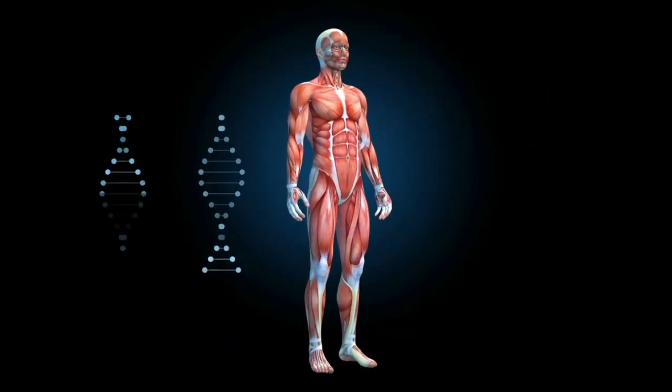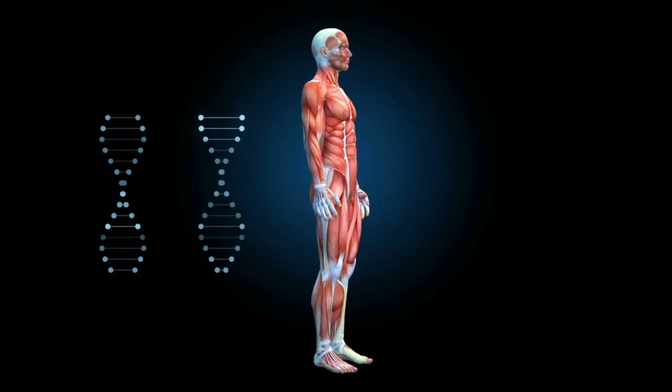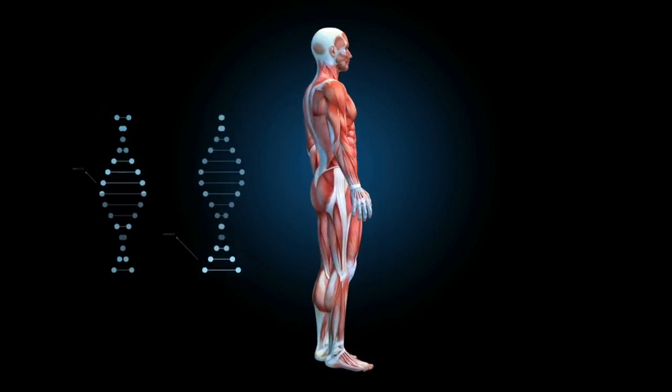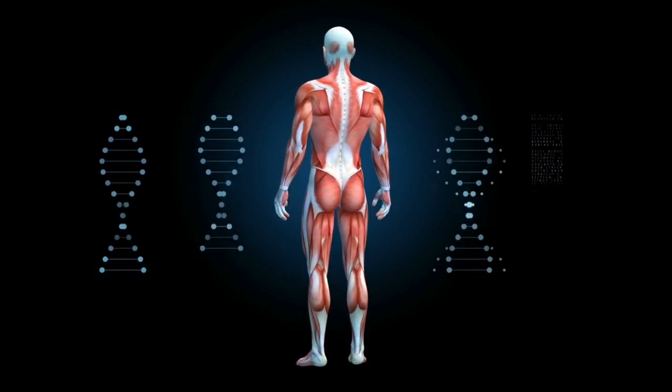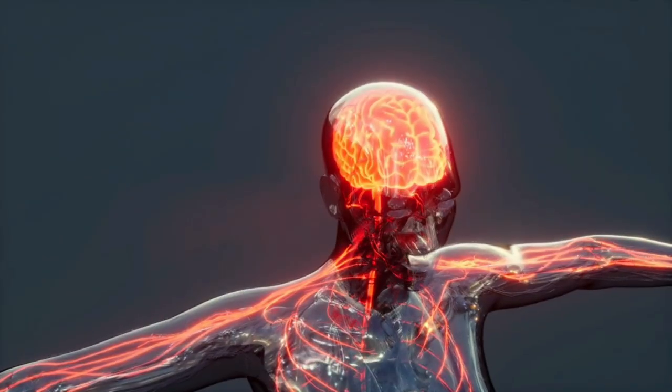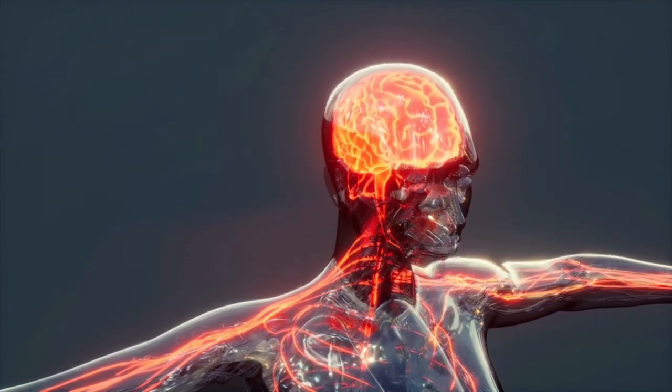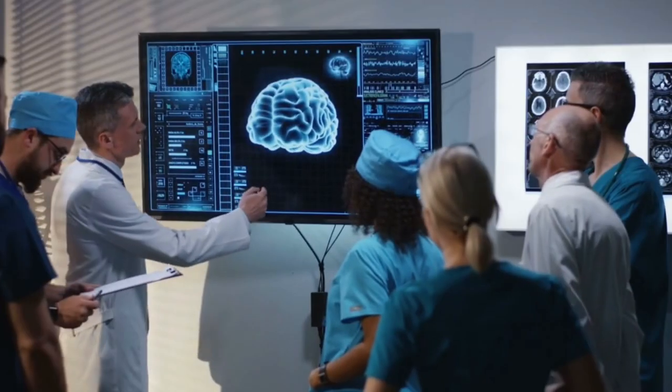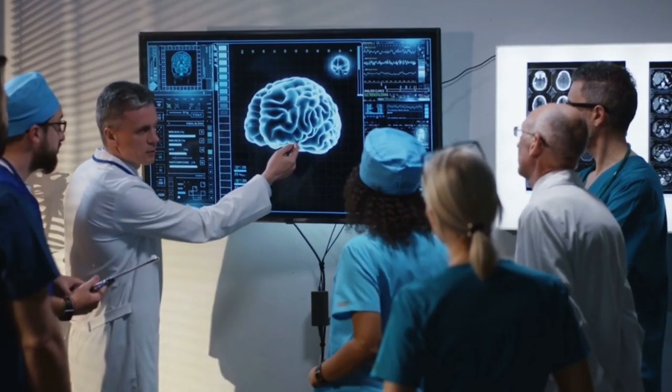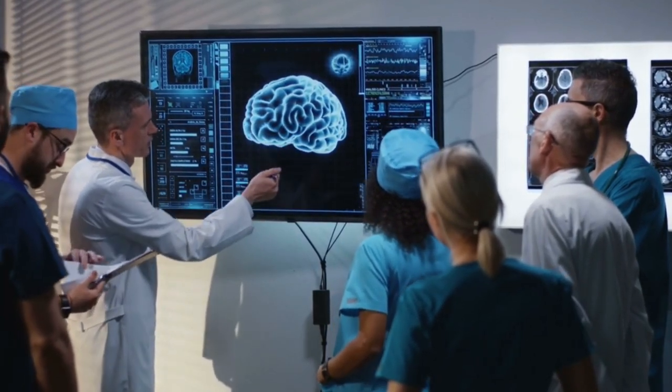The brain, a tangible mass of nerve cells and intricate connections, acts as the command center for our physical actions and reactions. It's the tangible component that keeps us alive and functioning. On the other hand, we have the mind, an abstract entity that oversees our thoughts, emotions, consciousness and imagination. It's the intangible part of us that makes us who we are, shaping our personality, our beliefs and our dreams. The mind is the architect of our subjective experiences, sculpting our perception of the world around us.